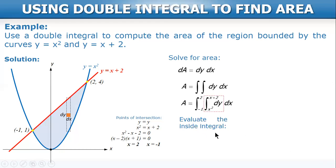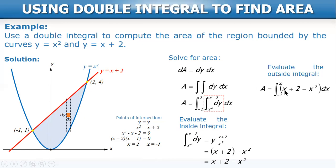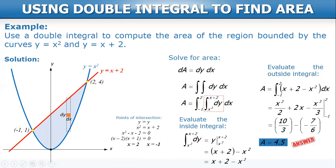We evaluate the inside integral first. The integral of dy is simply y, with lower limit x² and upper limit x + 2. We get x + 2 minus x², which is the upper minus lower limit. We then substitute this into the original expression and evaluate the outside integral. After integrating and evaluating at the upper and lower limits, the result is 4.5.